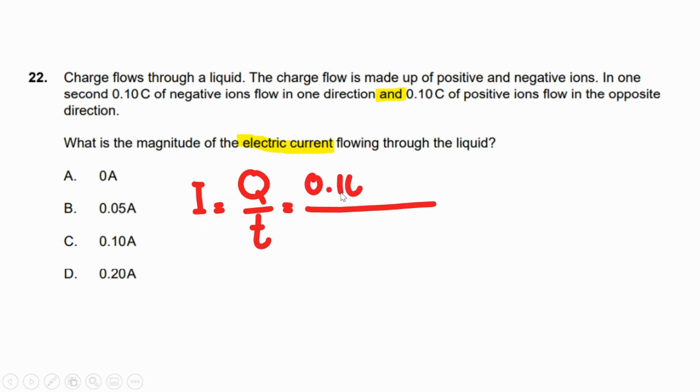The total amount is 0.10 for positive plus 0.10 for negative, divided by the time taken. Here it's only one second, so finally the electric current I is 0.20 ampere. The correct answer is D.